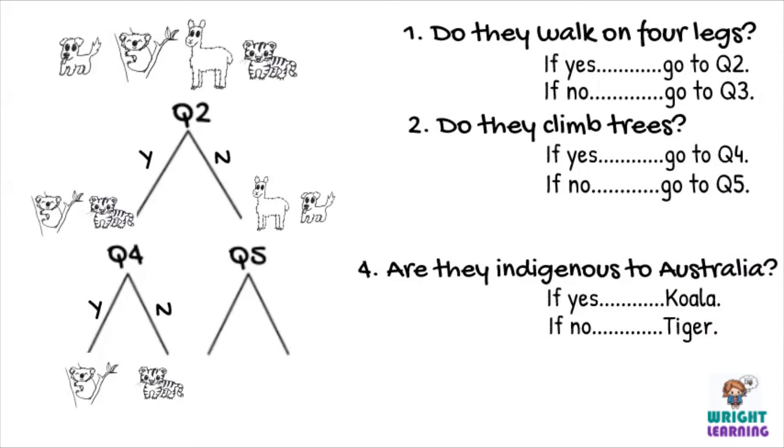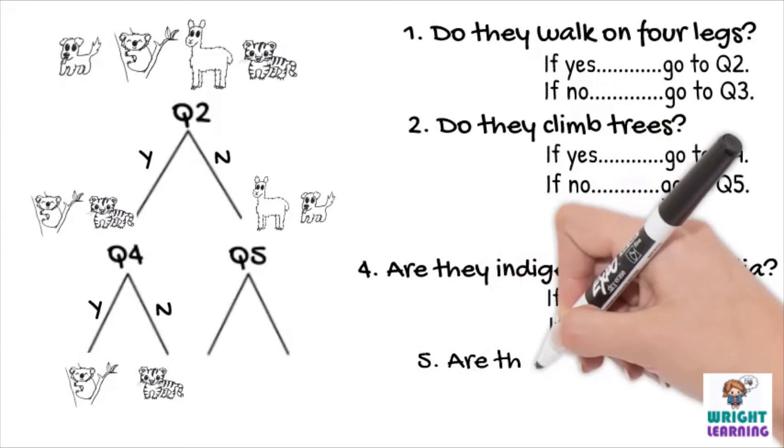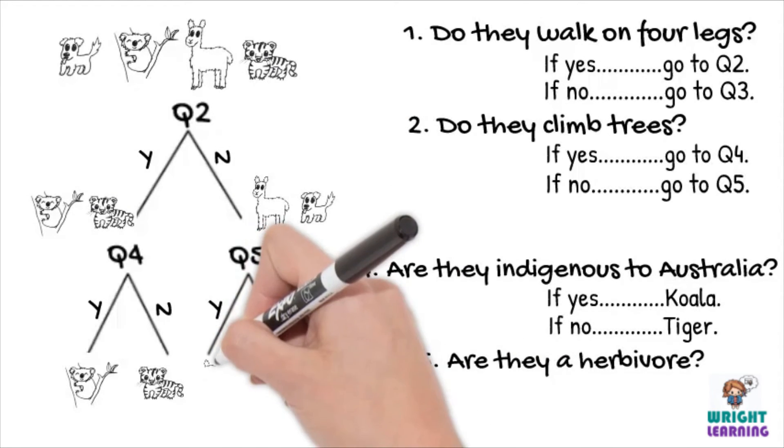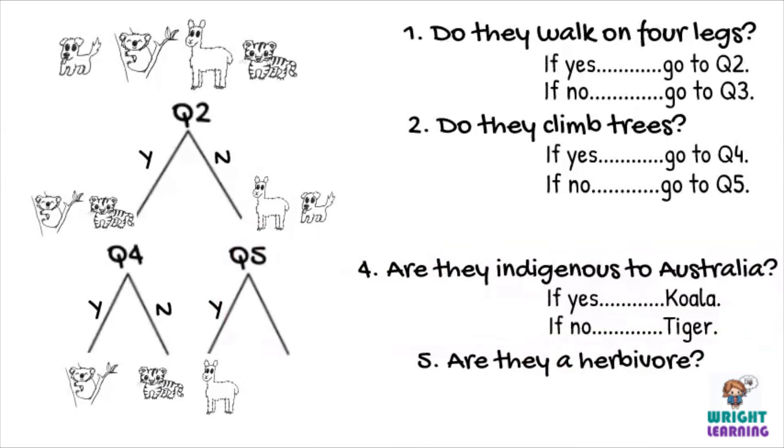Then for the last group that needs separating on this side of the dichotomous key, we can ask, are they a herbivore? A herbivore is an organism that only eats a plant-based diet. So the yes branch will lead to the alpaca, and the no branch will lead to the dog.